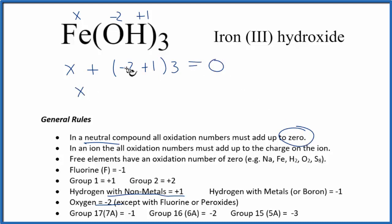So x, that's -1 times 3, minus 3 equals zero. x is going to equal plus 3. So the oxidation number on the iron, that's going to be plus 3.